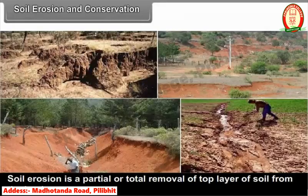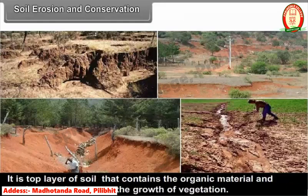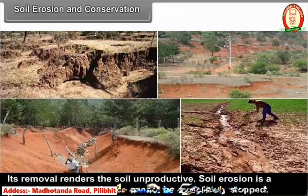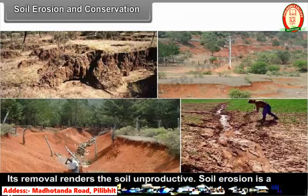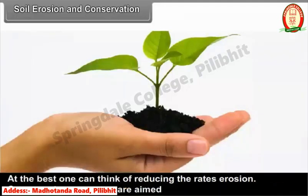Soil erosion is a partial or total removal of the top layer of soil from the land. It is the top layer that contains organic matter and nutrients and promotes the growth of vegetation. Its removal renders the soil unproductive. Soil erosion is a natural process and hence cannot be completely stopped; at best one can think of reducing the rates of erosion.